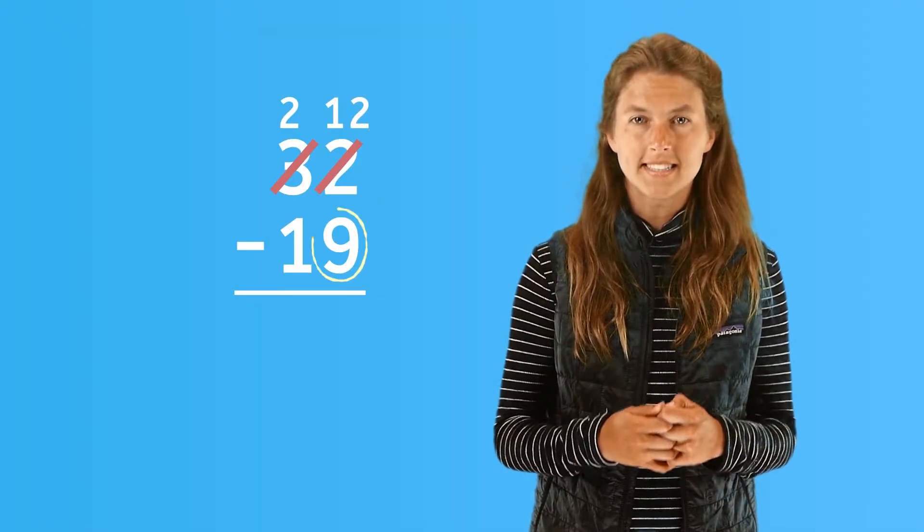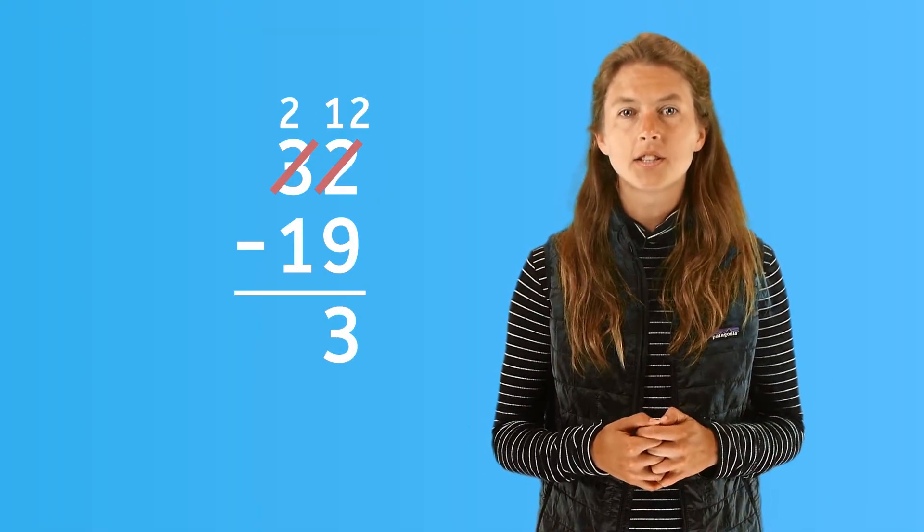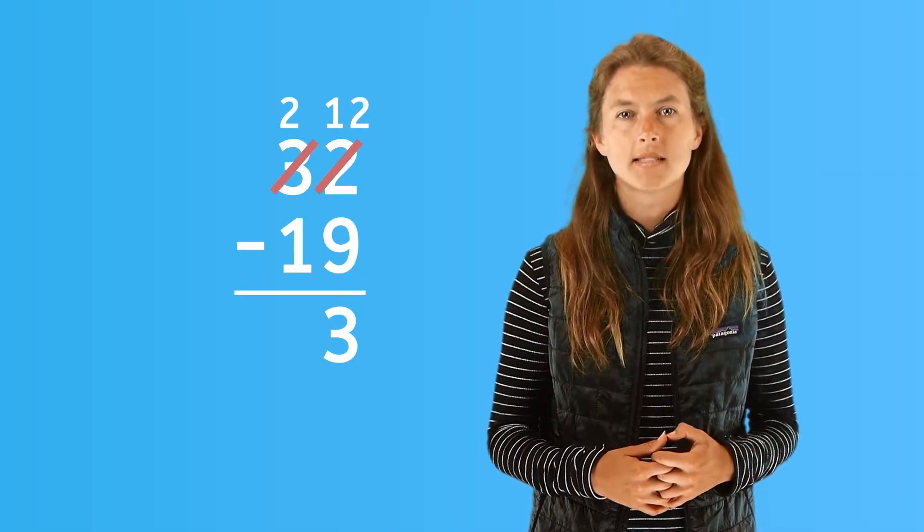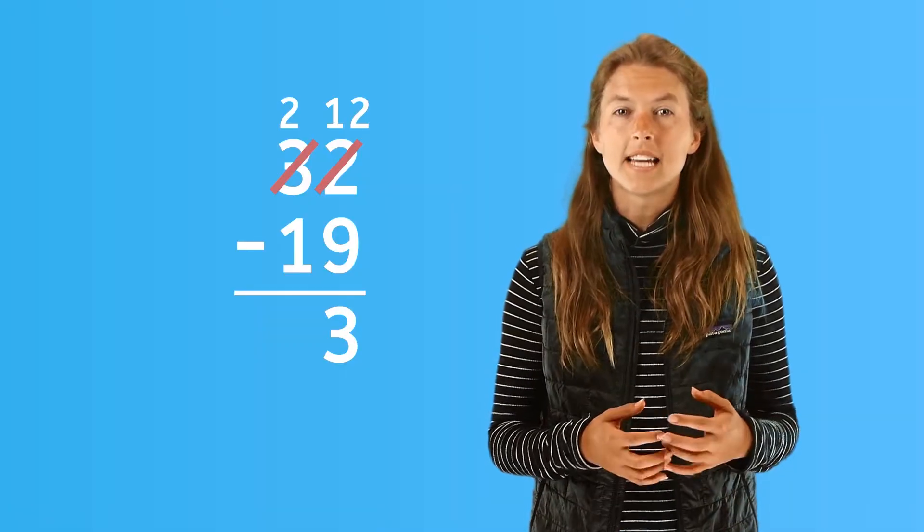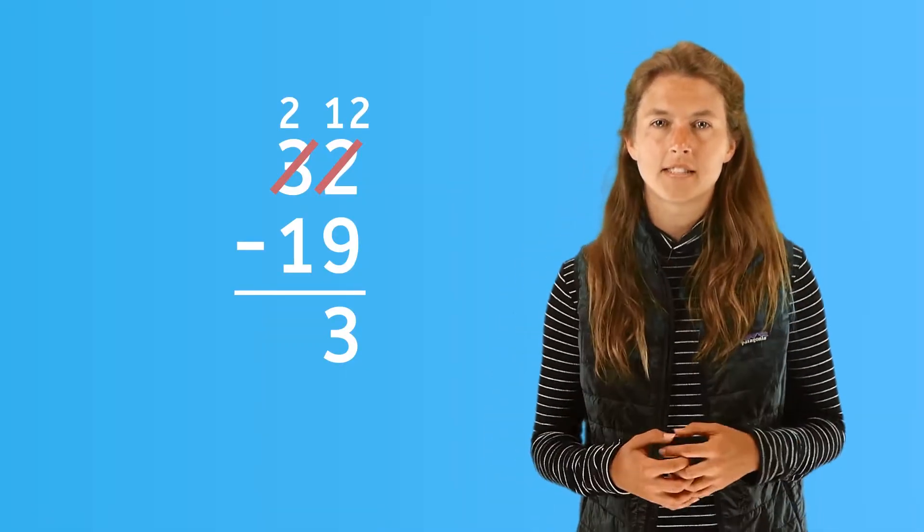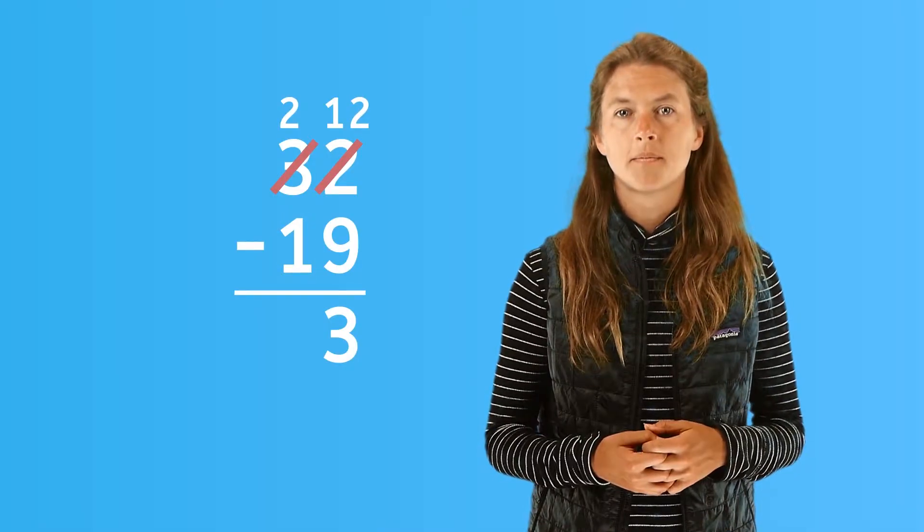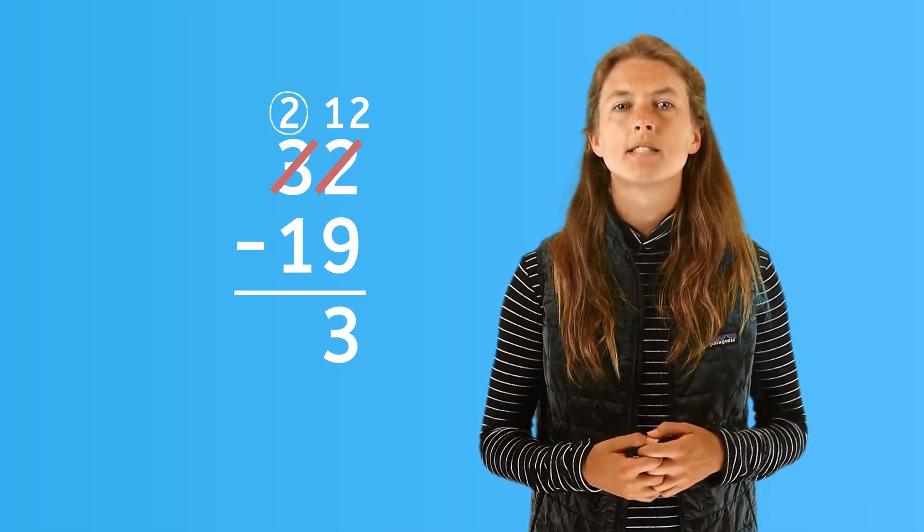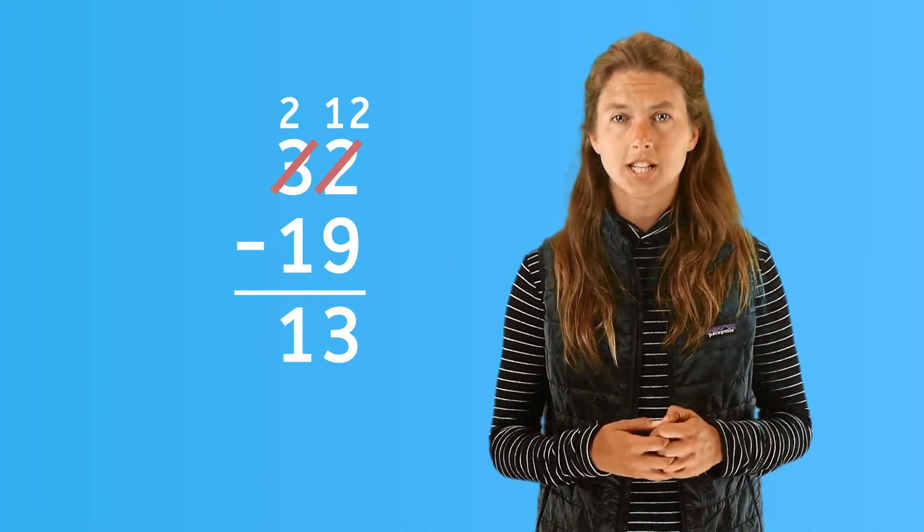Twelve ones minus nine ones is three ones. We write the answer three under the subtraction line in the ones place. When we go to the left to tackle the tens place, we still have enough tens, two tens, to subtract the one ten from the nineteen. Two tens minus one ten is one ten. We write the one under the subtraction line.